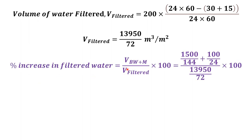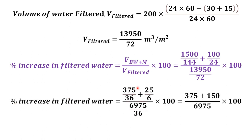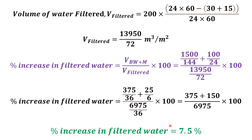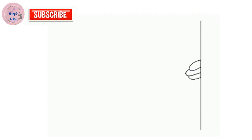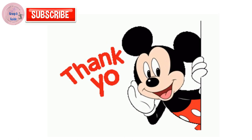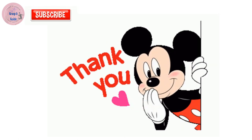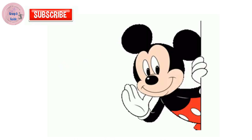Now we calculate the percentage increase in filtered water: (volume of backwashed water + volume of maturation water) ÷ volume of filtered water × 100. Substituting: (1500/144 + 100/24) ÷ (13950/72) × 100 = (375 + 150) ÷ 6975 × 100 = 7.5%. So the percentage increase in filtered water is 7.5%. If you have any doubts, please comment — thank you.